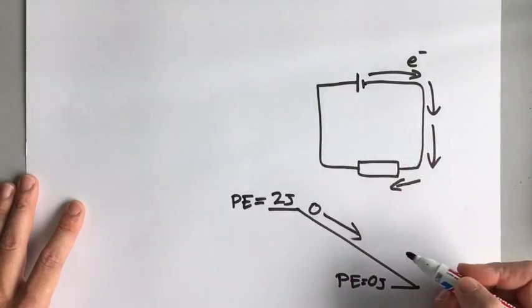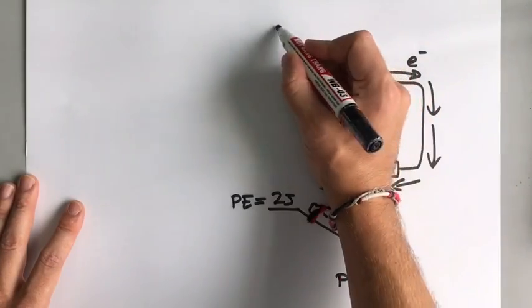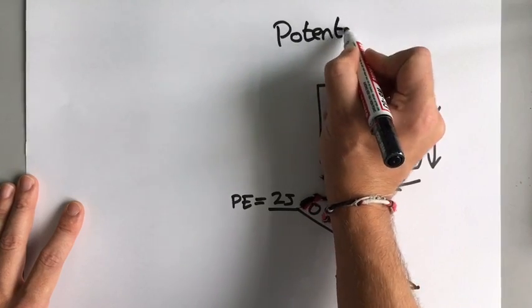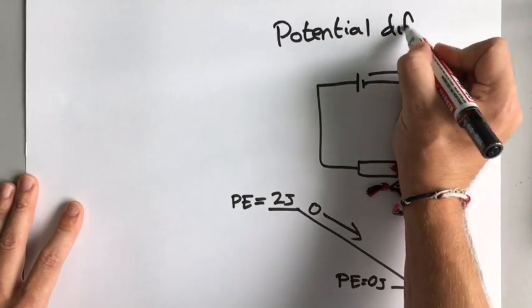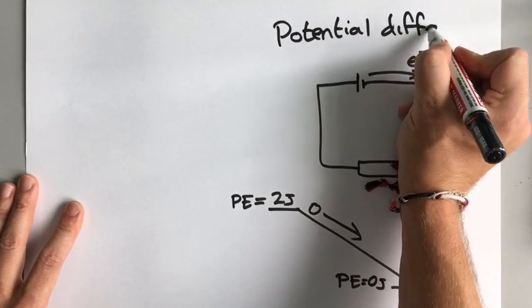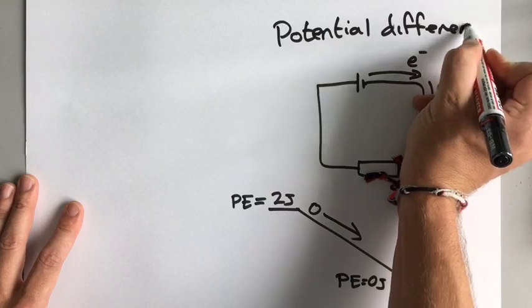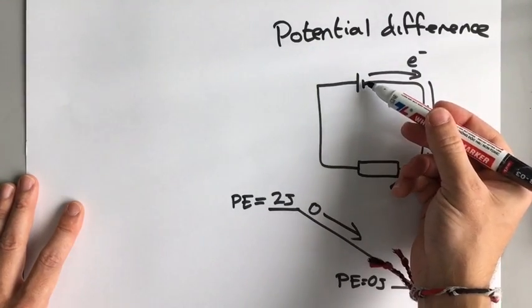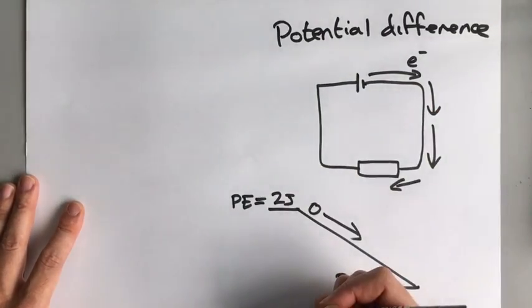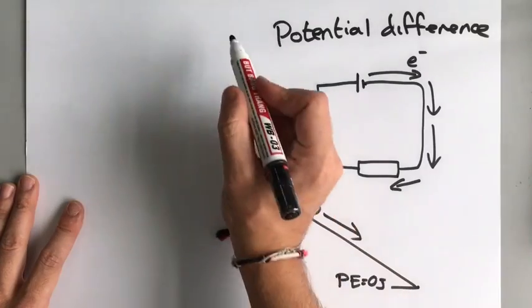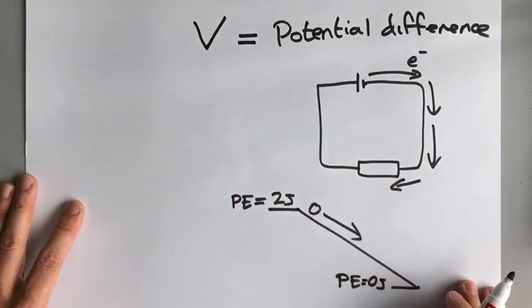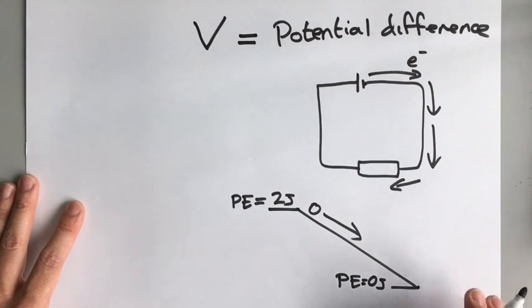What we measure in circuits is that potential difference — the difference in the potential energy at one point in a circuit to another point in a circuit — and we call that voltage as well as potential difference, and we give it the letter V.